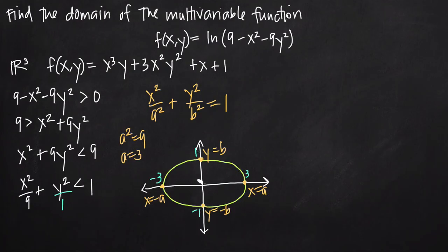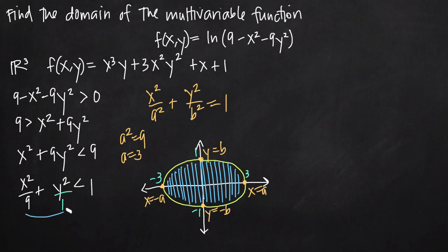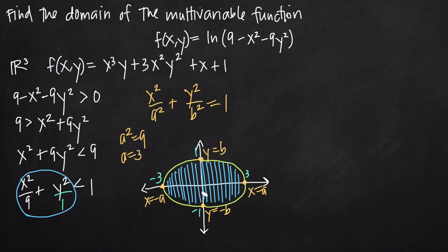So our domain consists of all of the points inside this ellipse. All coordinate points on the inside are in the domain of our function. Because our inequality is strictly less than 1, the boundary line of the ellipse is not included. If it were less than or equal to 1, we'd include the boundary too. So the domain is all points strictly inside the ellipse, not including the boundary — and we shade in that interior region to represent the domain of this multivariable function f(x, y).